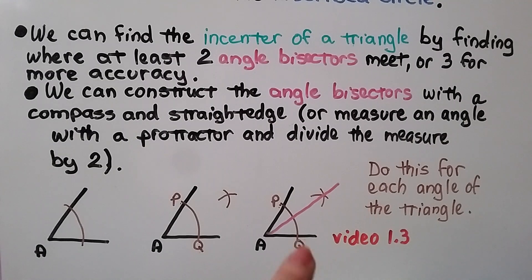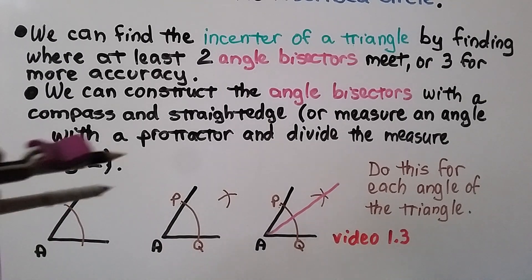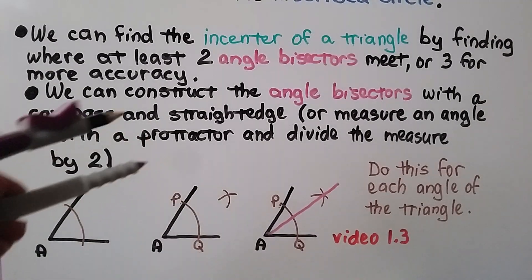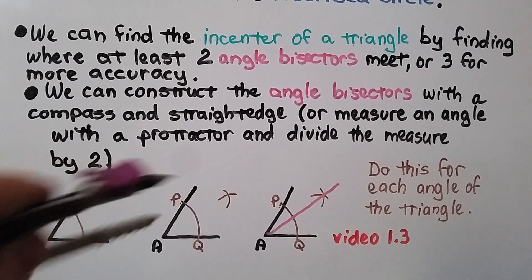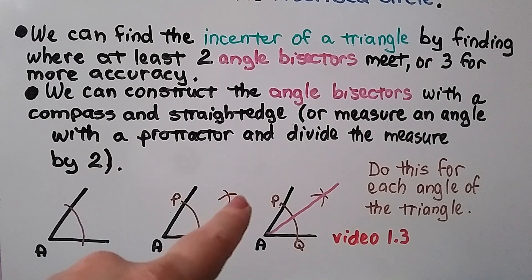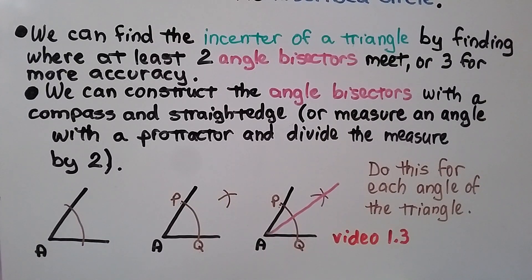As we learned in video 1.3, linked in the description, we can put our compass on vertex A, make an arc, then label the intersection points P and Q. We put the compass on each point, make a small arc, and where those arcs meet, we draw our angle bisector through that point with a straight edge. We do this for each angle of the triangle, and where those bisectors meet is the in-center.